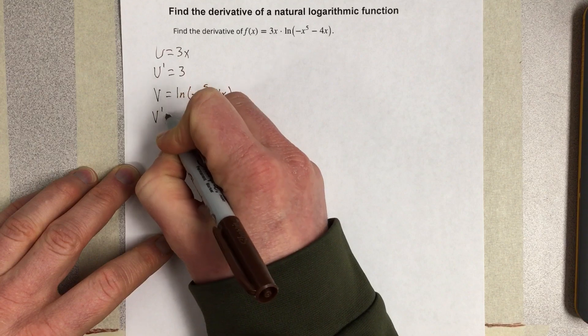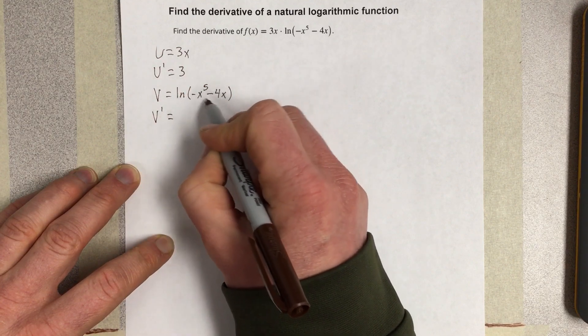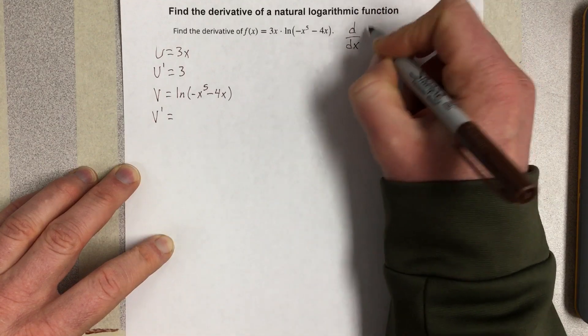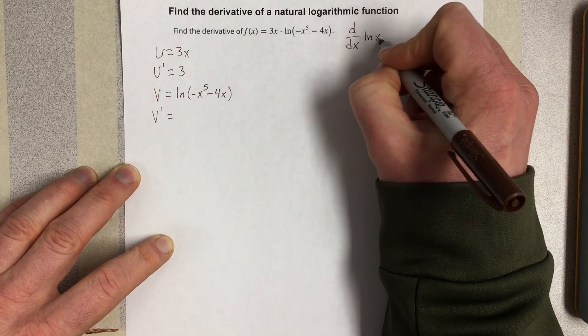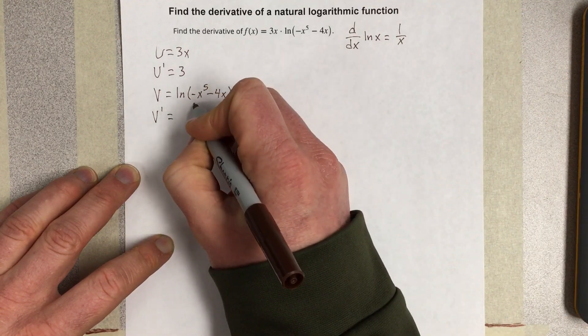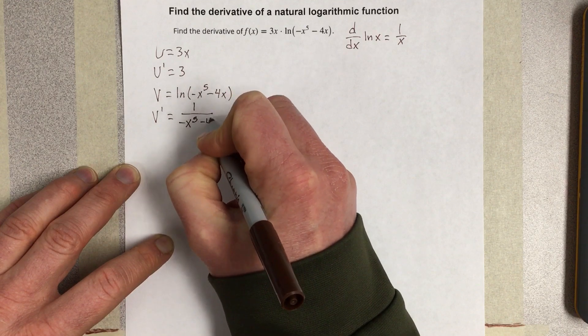Now I'm going to have v prime here, which is going to be the derivative of this natural log, but it's a chain rule because I have a function inside of a function. So let's first determine what the derivative of a natural log is, and that's 1 over x. So when I take this derivative, I get 1 over negative x to the 5th minus 4x.